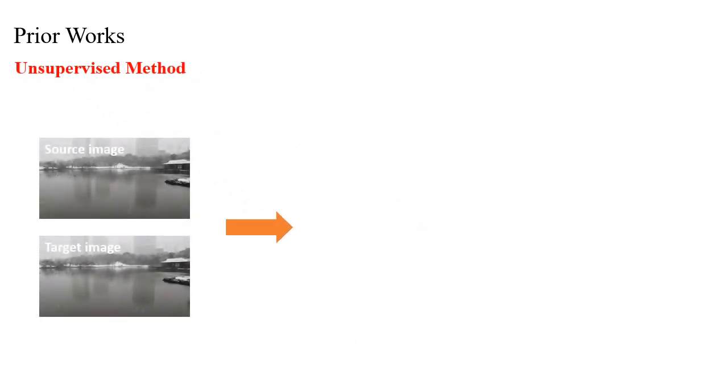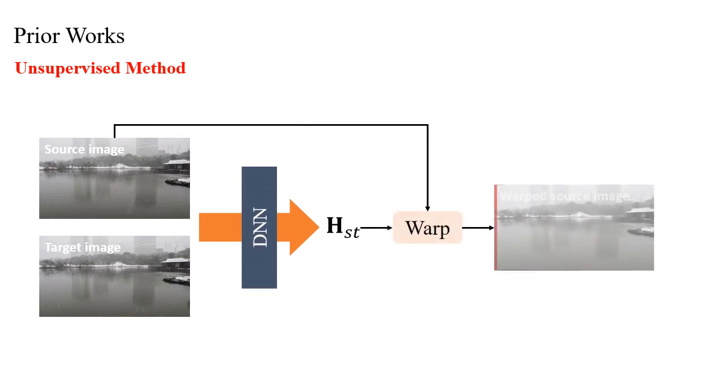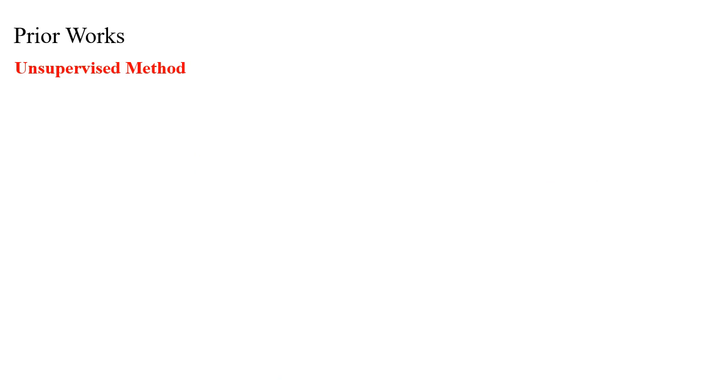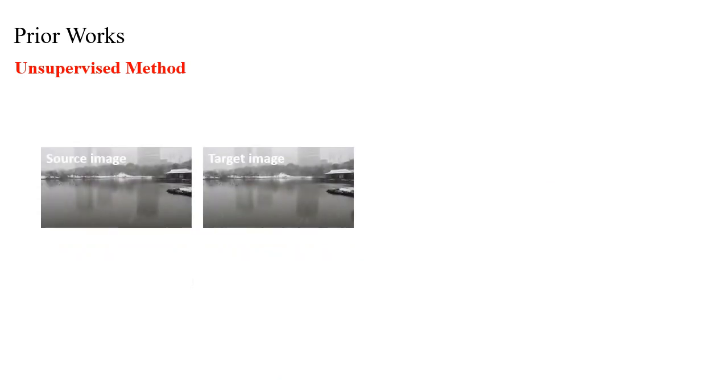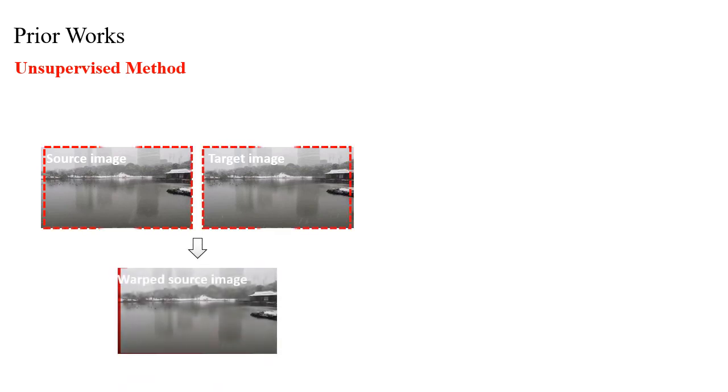The unsupervised ones adopt label-free training strategies that aim to minimize the photometric distance between the warped source images and target images, being better generalized to various scenes. With the assistance of photometric losses, the unsupervised methods perform well in small baseline scenes.